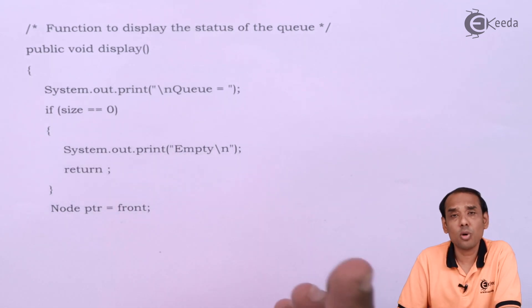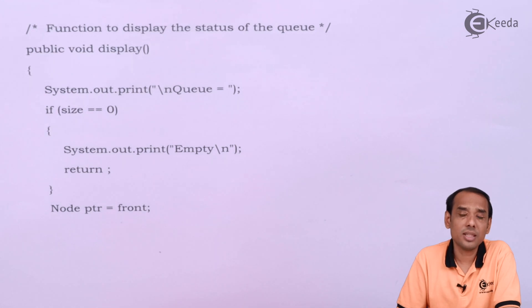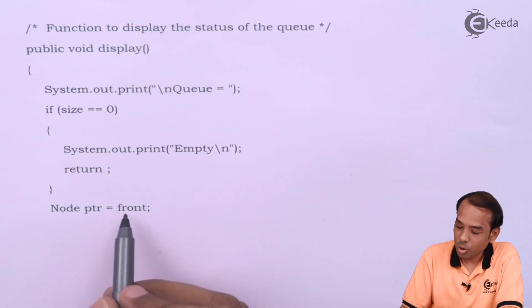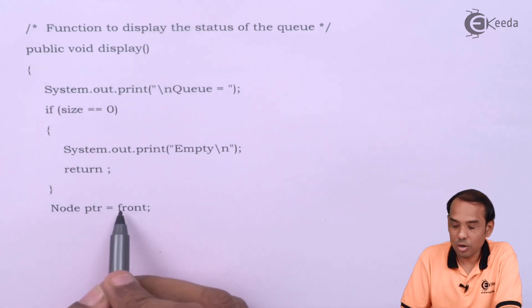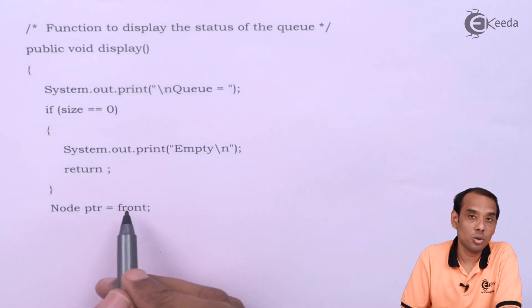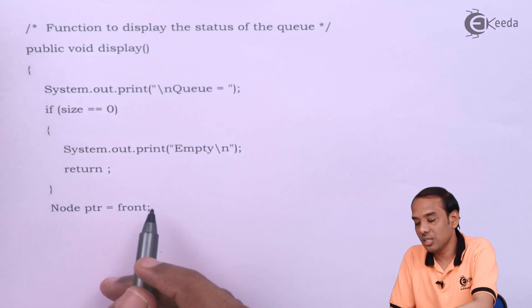If not, size is 2, 3, 4, it can be anything. In that case, we need to use the concepts of iteration looping. In that, we are going to pass the value of front to the ptr node. So node ptr will be adding the value of each ptr node value front. Once this is done, I am going to iterate through the loop.